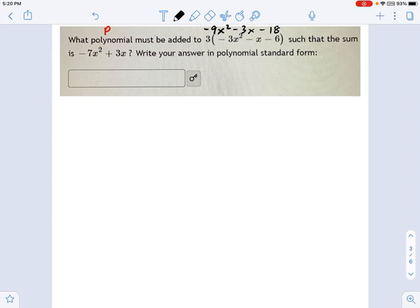So what polynomial P must be added to what I just wrote, such that the sum is -7x² + 3x? Well, think about it this way. This is going to be some kind of an addition problem: something times x², plus something times x, plus some number.